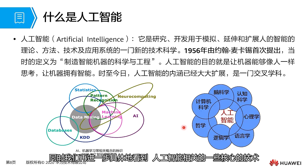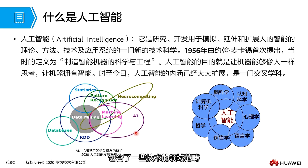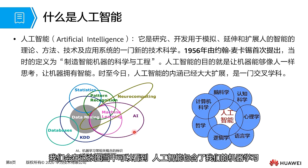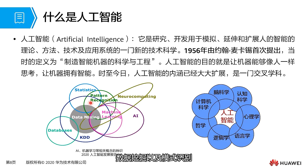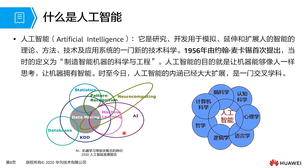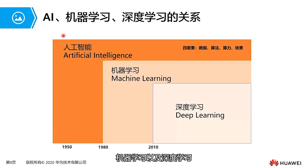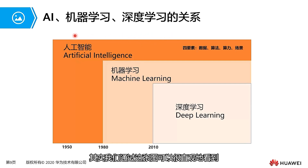Delving into core technologies related to artificial intelligence, we can see it covers domains such as machine learning, data mining, pattern recognition, neural computing, and other technical fields. Among the terms we often hear — artificial intelligence, machine learning, and deep learning — what kind of relationship do they have? Through this diagram, we can intuitively see that they are mutually inclusive relationships.